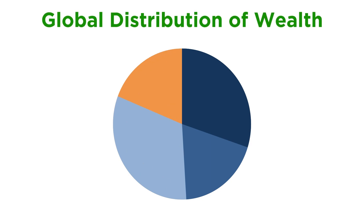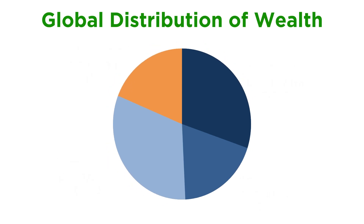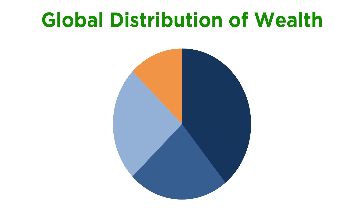This graph displays current wealth inequality across the entire world. As you can see, most of the wealth is concentrated at the top, with a full thirty percent of wealth belonging to just a thousandth of one percent of the global population. And this extreme polarization is only increasing.